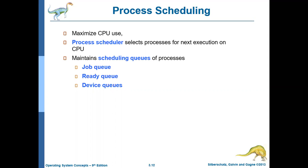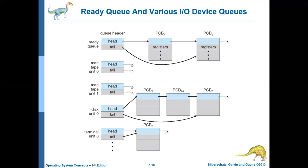For different devices there will be different queues. So for the hard disk, there will be a separate device queue, and whichever process is waiting for the hard disk will wait in that queue. During its lifetime, the process can move from one queue to another queue. This diagram shows how these various queues are managed by the operating system.